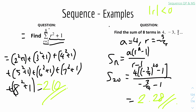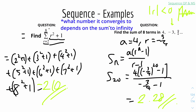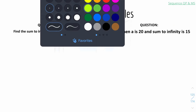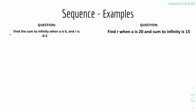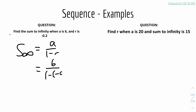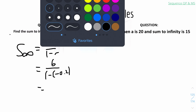Because the modulus of r is less than 1, the graph will be converging — getting smaller and smaller until it tends to 0. Then for sum to infinity: when a equals 6 and r equals minus 0.2, use the formula S-infinity equals A over (1 minus R). That gives 6 over (1 minus (minus 0.2)) equals 6 over 1.2, which equals 5. The answer is 5.